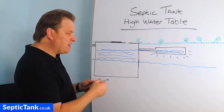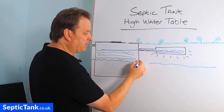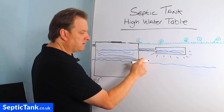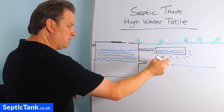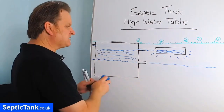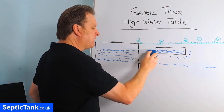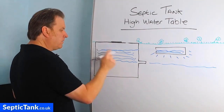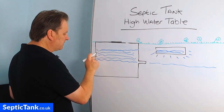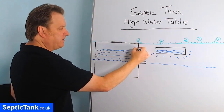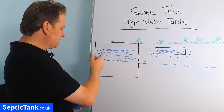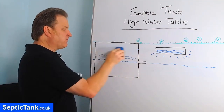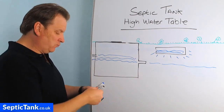What if you can't raise the level of the outlet pipe? Let's say the inlet pipe is positioned high on the tank — in that case you obviously can't have the outlet pipe higher than the inlet pipe, as the water would just back up towards your house. Everything works via gravity, so that won't work. So what do you do then if you can't raise the height of the outlet pipe?